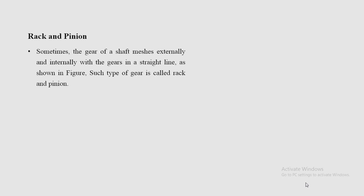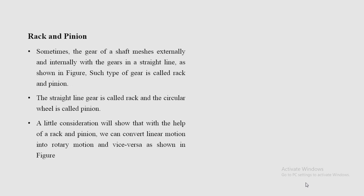The third type is rack and pinion. Sometimes the gear of a shaft meshes externally and internally with gears in a straight line, as shown in the figure. Such a type of gear is called rack and pinion. The contact is in a straight line as shown in the figure. The straight line gear is called the rack and the circular wheel is called the pinion.